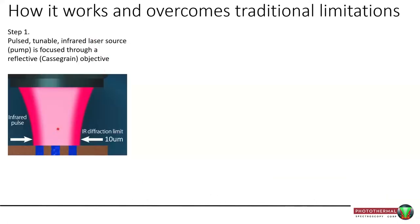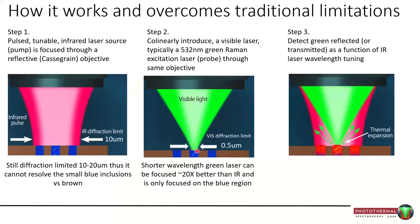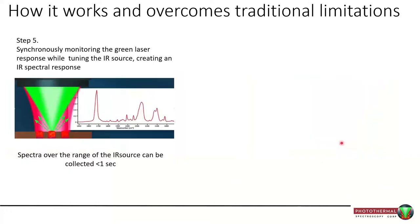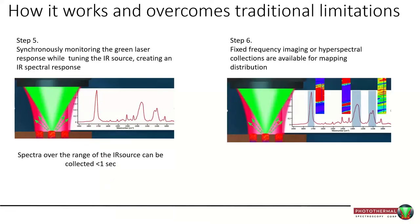How does it work? We deliver pulsed infrared light through a regular Cassegrain objective onto the sample surface, which has a fairly wide diffraction limit. At the same time we deliver the visible probe beam, focused to a much tighter spot. As we tune our infrared wavelengths, absorption at certain points generates thermal expansion and changes in refractive index. These together change how the green light is reflected back, so we measure green light intensity as we tune infrared wavelength and extract the infrared spectrum. Using the QCL, you can also do fixed-frequency imaging.